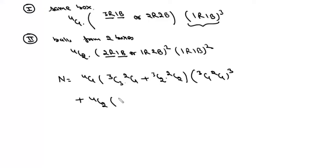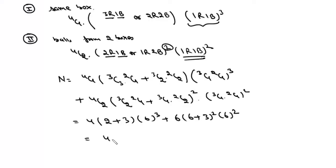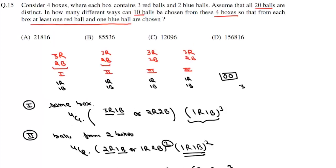For Case 2: (3C2 × 2C1 + 3C1 × 2C2) squared for the 2 chosen boxes, times (3C1 × 2C1) squared for the remaining 2 boxes. This gives 4 × (2 + 3) × 6³ + 6 × (6 + 3)² × 6² = 4320 + 17496 = 21816. So the total number of ways is 21816, which is option A.